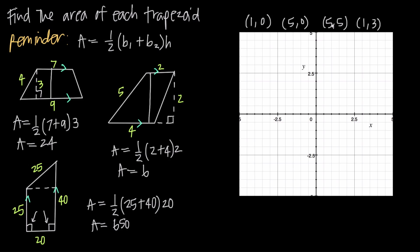Sometimes we're given the vertices — the four corners — of the trapezoid and need to find the area. The easiest approach is to graph the four points on a coordinate system to get a picture of the trapezoid and confirm the correct bases and height. Plotting the points (1,0), (5,0), (5,5), and (1,3) and connecting them, we see that the left and right sides are parallel — similar to the third example — while the top and bottom sides are not parallel. We also have 90-degree angles on the left and right sides.